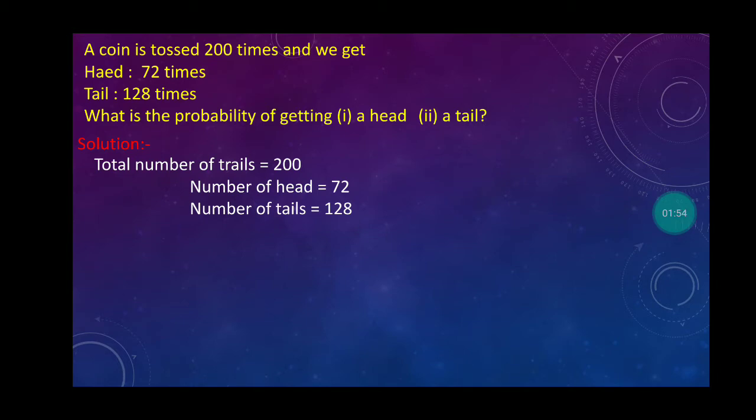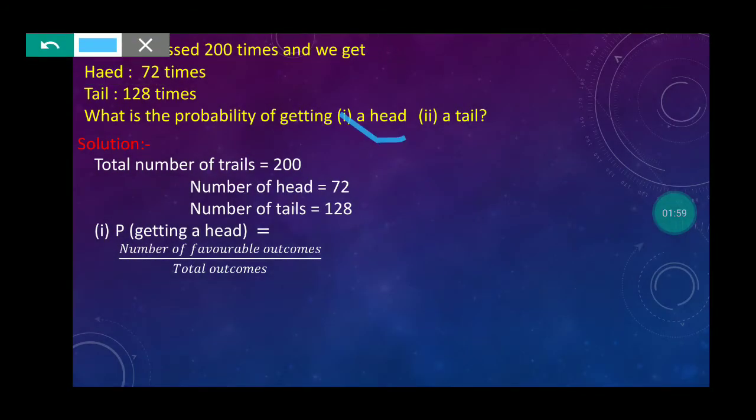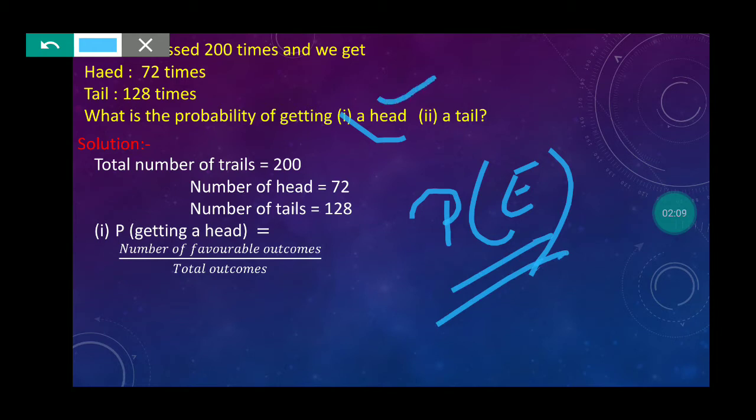Now, solution is this. Total number of trials - the coin was tossed 200 times, so trails are 200. Head came 72 times. Tail came 128 times. First point: Head. We need to find probability of getting a head. Using the formula we learned, P(E). E means event. The event is we want head, so P(getting a head) equals number of favorable outcomes upon total outcomes.